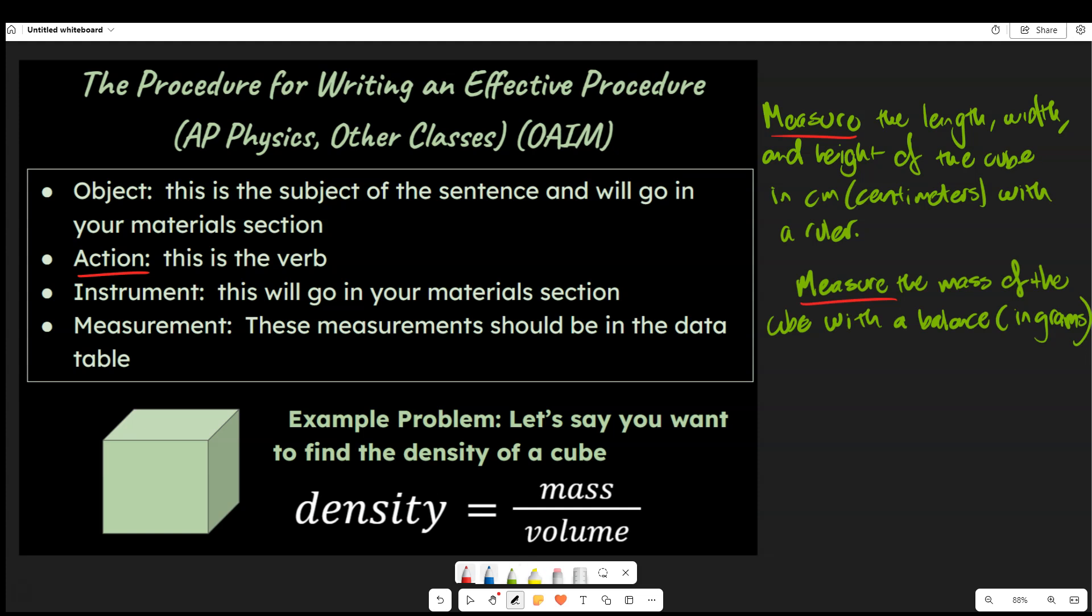If we're going to do our instruments in blue, let's say the instrument here is the ruler and the balance. If we want to say what the measurement is, so here we're going to do mass, and you could also include grams. And in the above, you could say the length, width, and height of the cube. And centimeters is what the measurements are measured in, you could say. And lastly, the objects. The object is here going to be the cube, and we have the cube again.